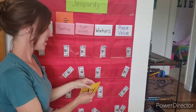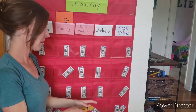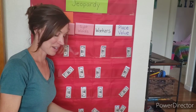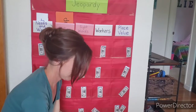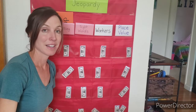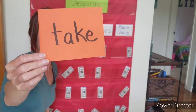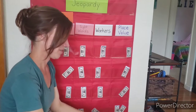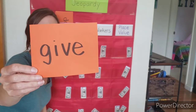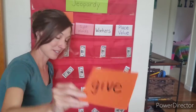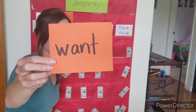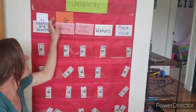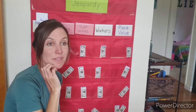I'm going to show you some sight words and I want you to be able to read them super quick. Are you ready? What's this word? Why. These are from the green list. What's this word? Take. What about this one? Give. Next one — what's this word? Want.